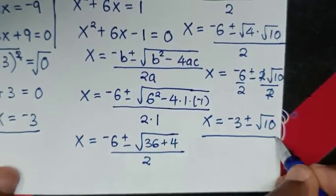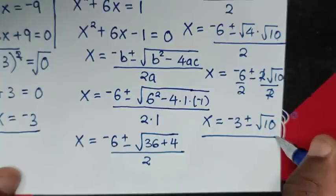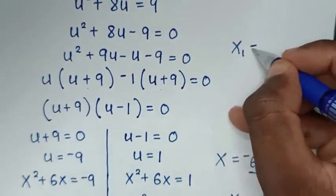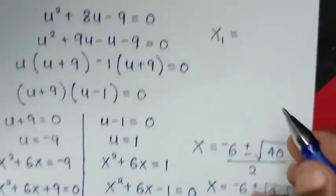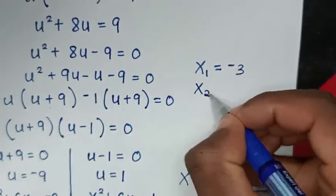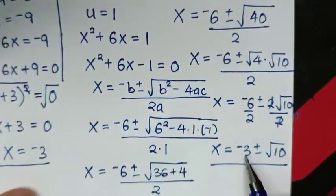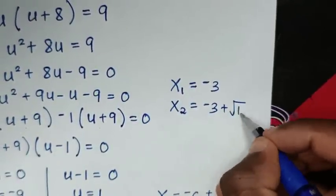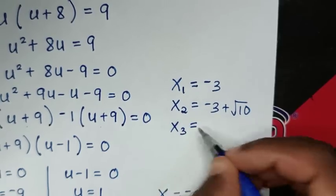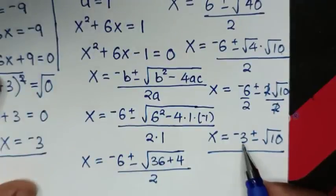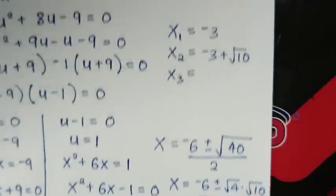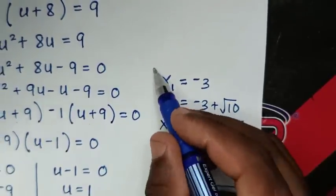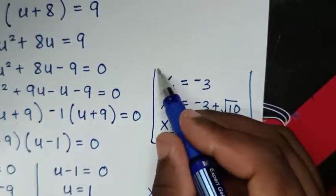From the quadratic formula we get two more real solutions: x = −3+√10 and x = −3−√10. So all three values of x for this problem are x = −3, x = −3+√10, and x = −3−√10.